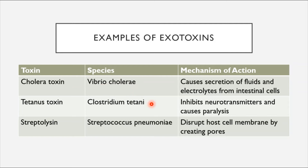Examples of exotoxins: Cholera toxin, produced by Vibrio cholerae, leads to massive secretion of fluids and electrolytes from intestinal cells, causing the rice-water diarrhea characteristic of cholera. Tetanus toxin, produced by Clostridium tetani, inhibits neurotransmitters and leads to paralysis. Streptolysin, found in Streptococcus pneumoniae, disrupts host cell membranes by creating pores in them. So, rather than causing general inflammation like endotoxins, exotoxins produce very specific types of damage.